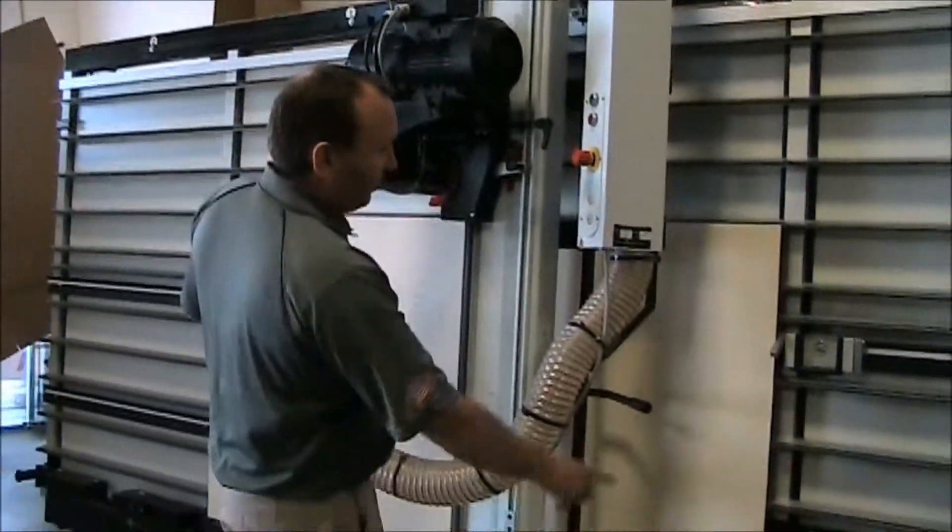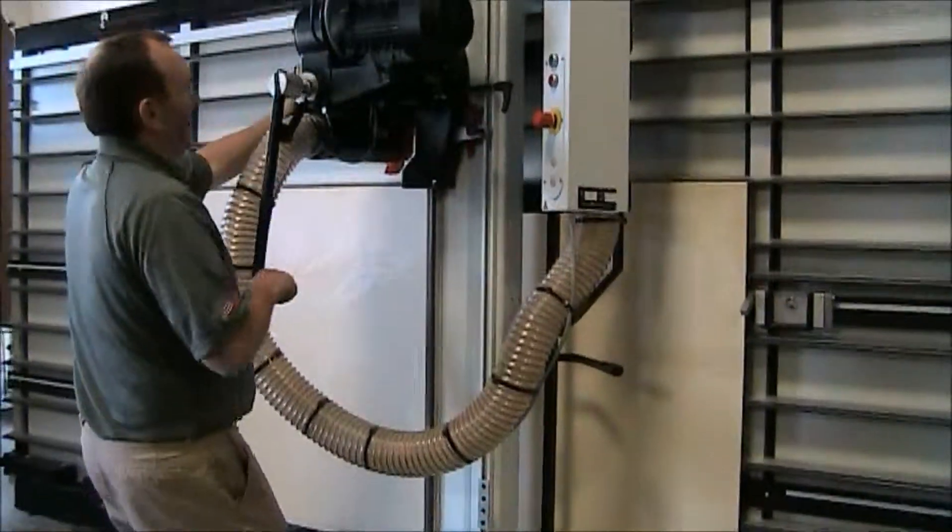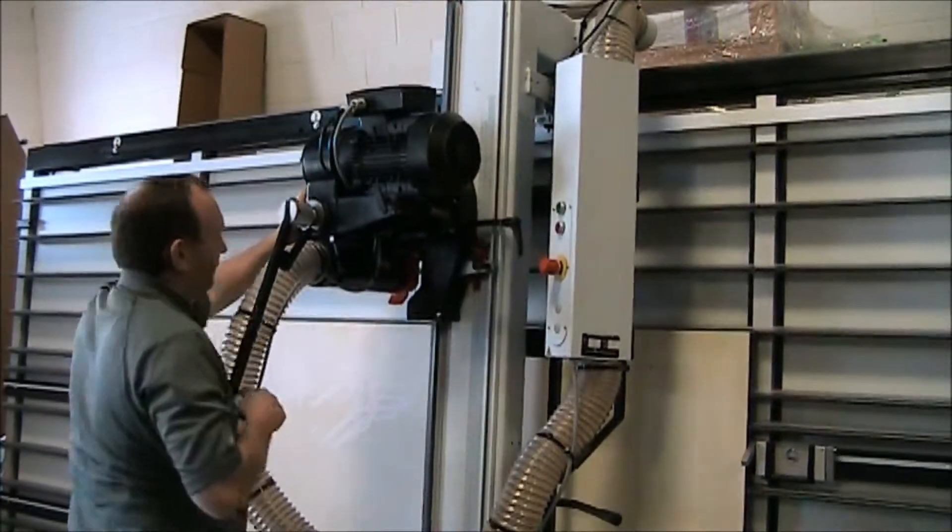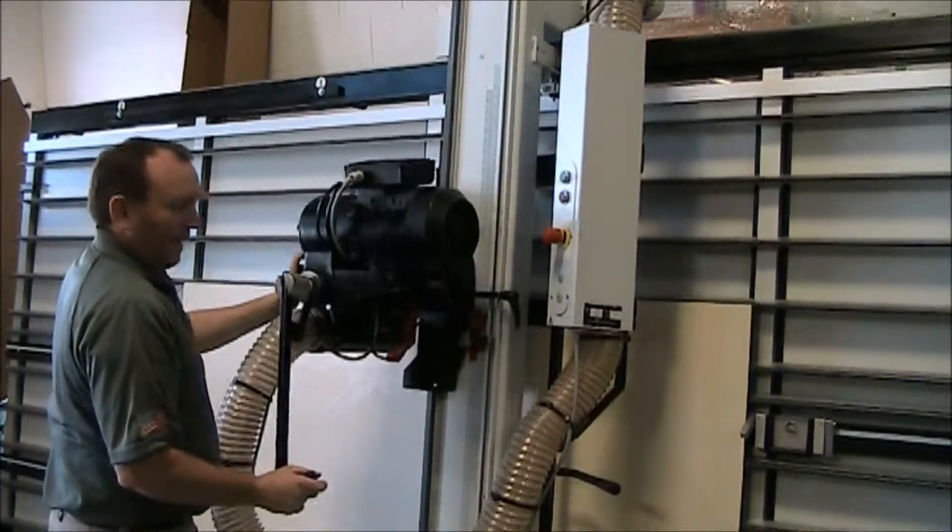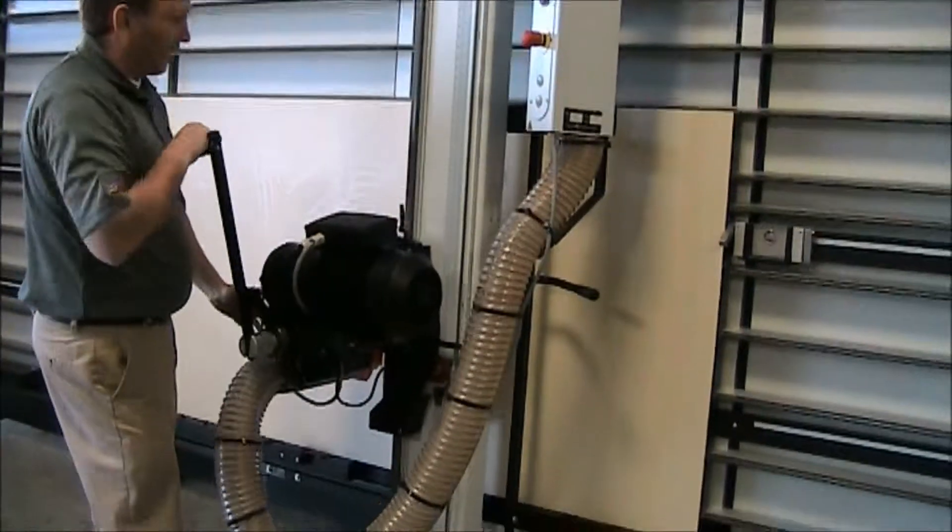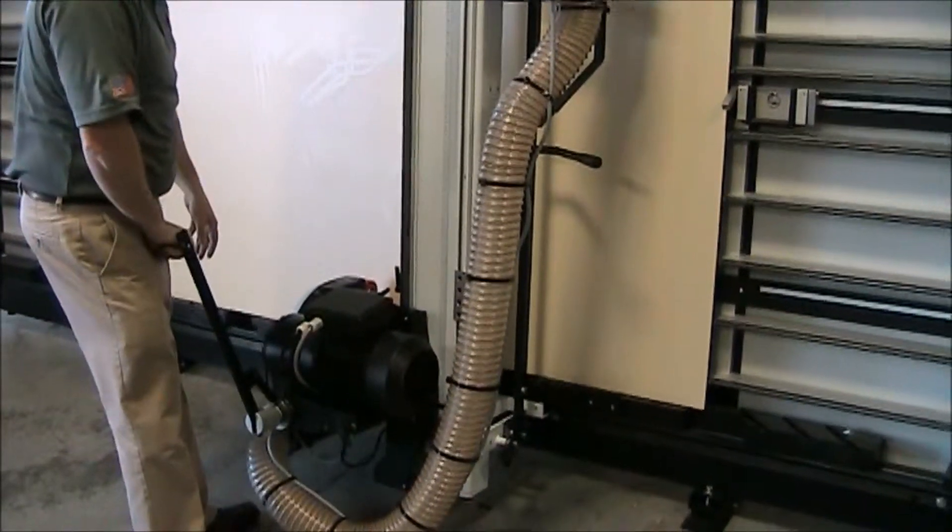So now once I'm locked in that position, now I can make my cut. I just bring my head down, unlock my rip lock if it's locked. And now I can come down to make any type of cutting I want to do. My panel cuts down all the way through.